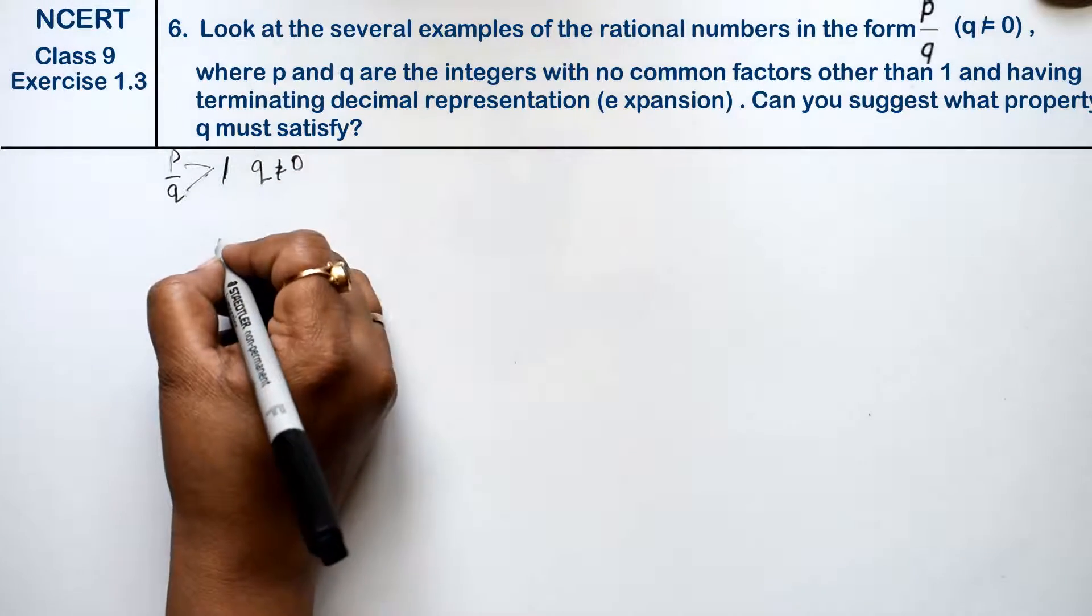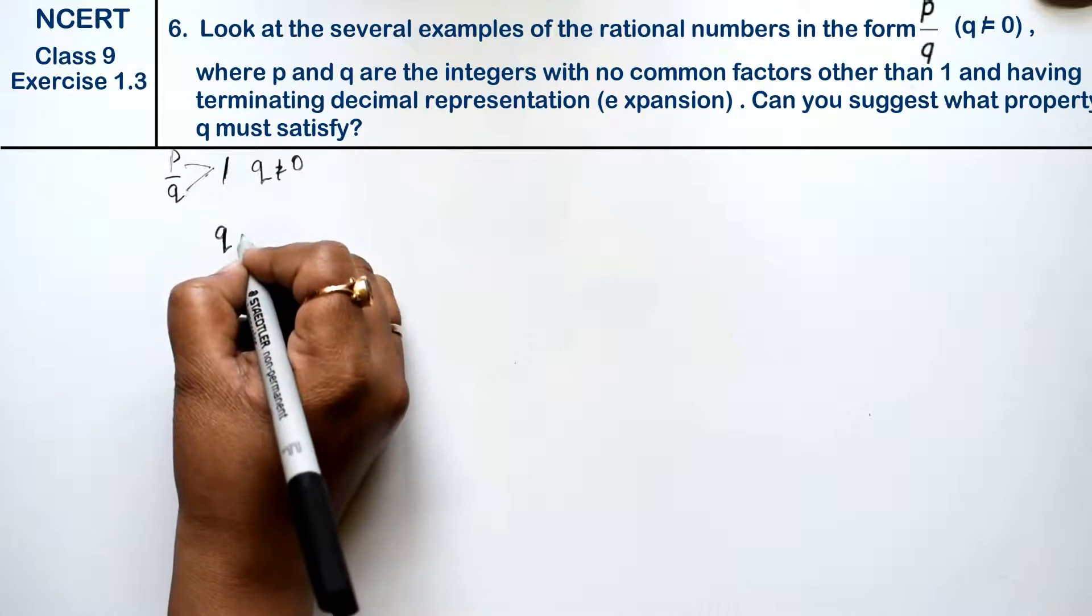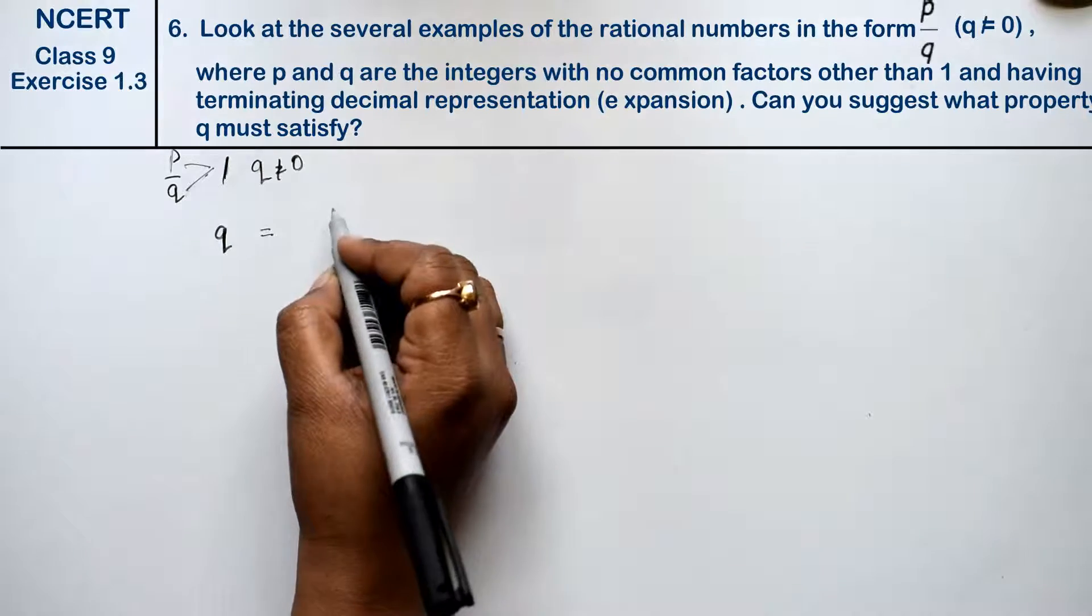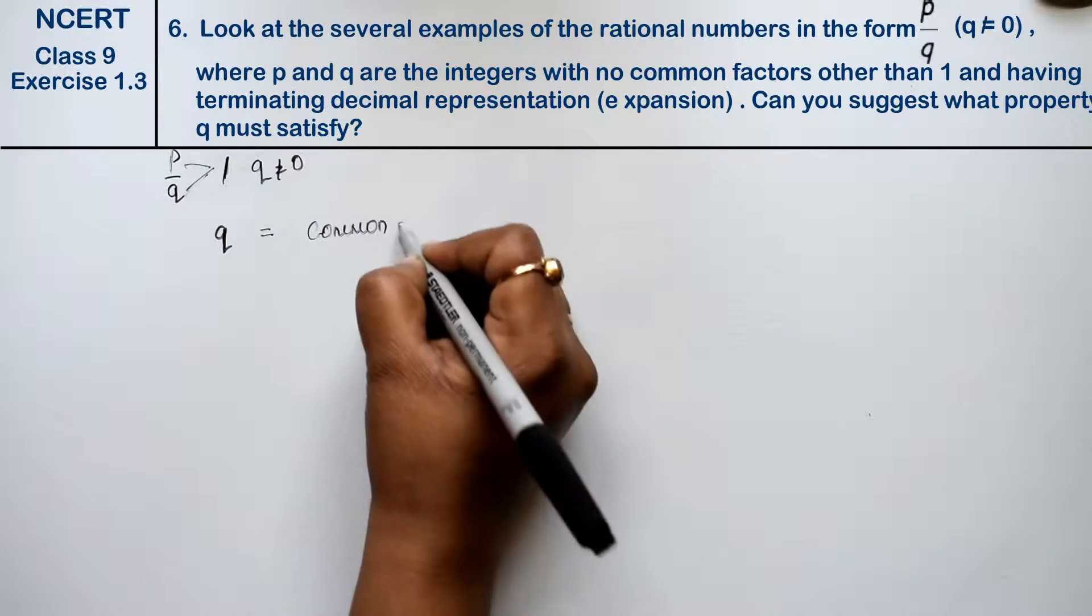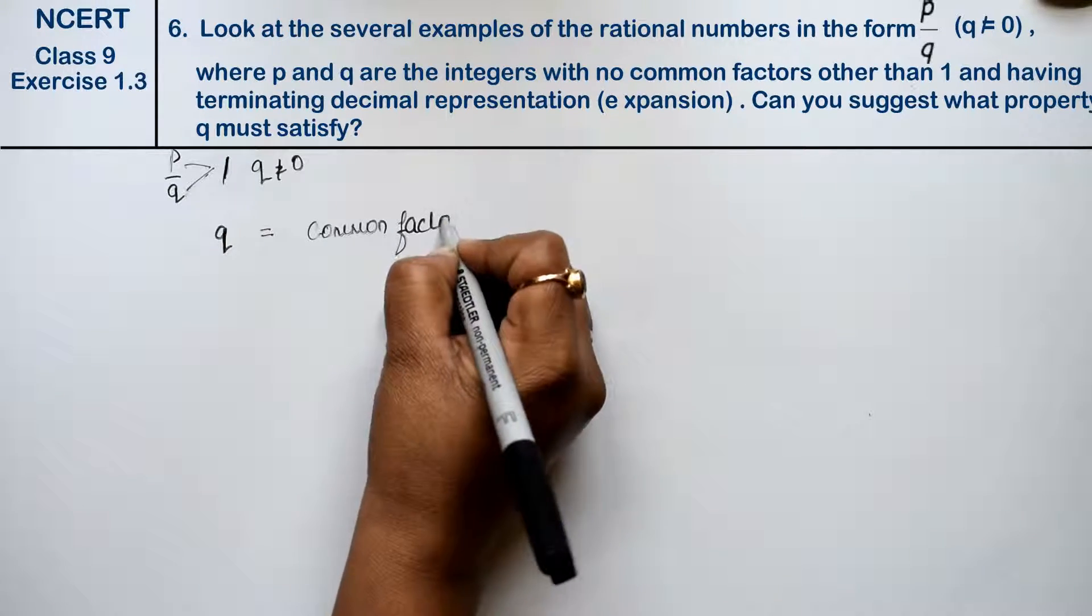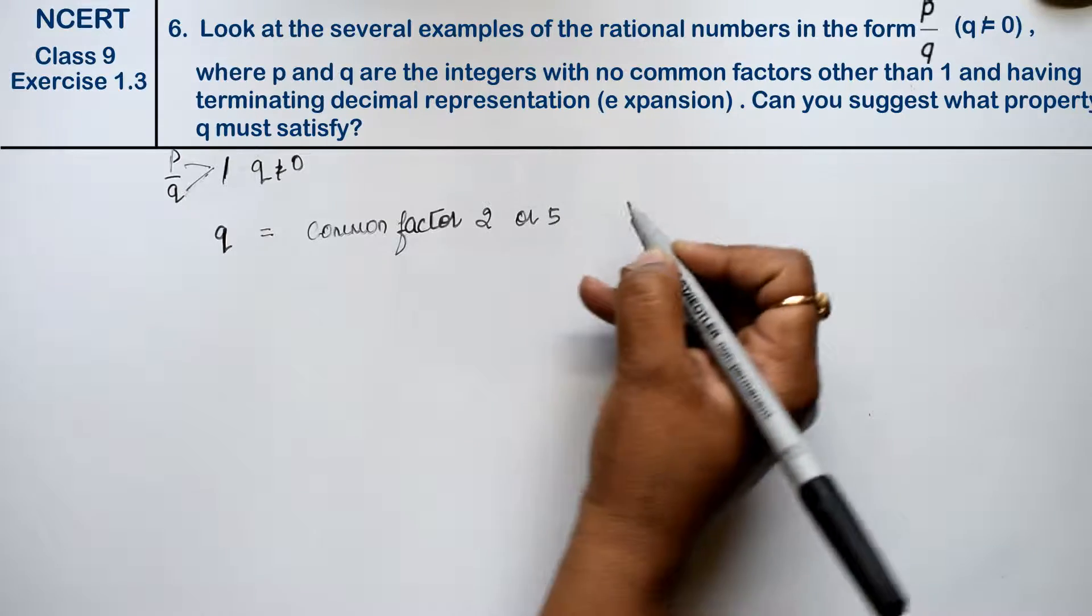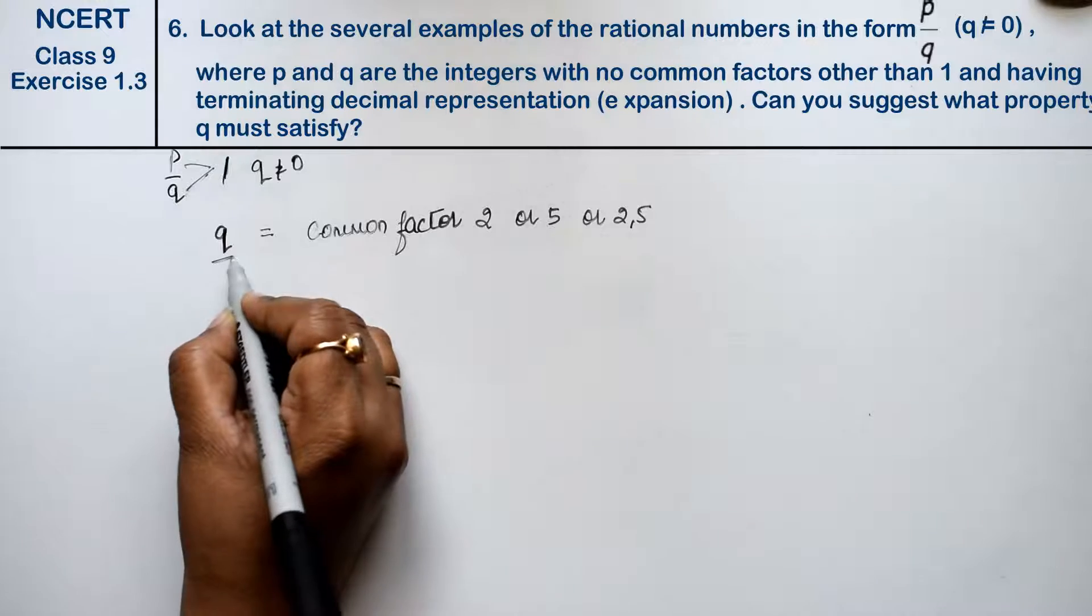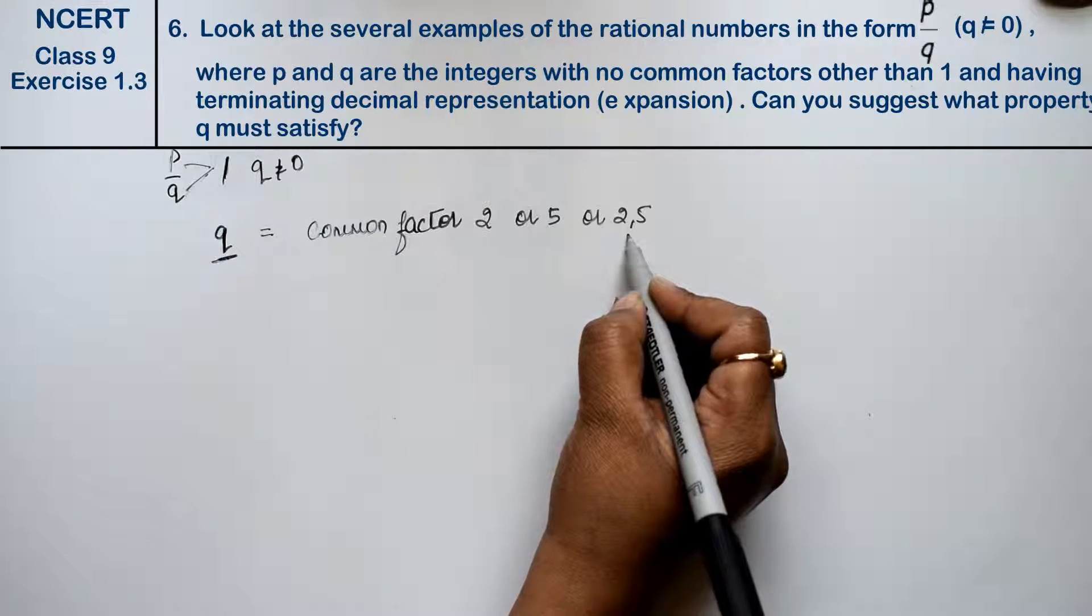Friends, q's two properties are terminating or not. What happens is that q is the common factor after doing prime factorization. If it is 2 or 5 or both 2 and 5, if q is the value of q, then it will always be terminating, otherwise it will not be terminating.